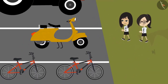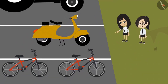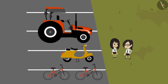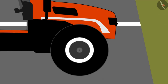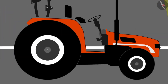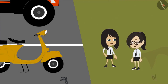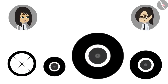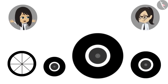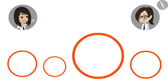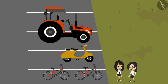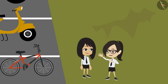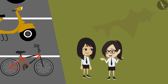And look at the tyres of the scooter. They are smaller than that of our bicycle. But the tractor also has two types of tyres and the front tyre is smaller than the tyre at the rear. We saw four different sizes of tyres, but all are in the shape of a circle. Yes, you are right Neha. All are circular.